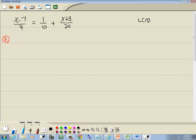Well, let's first find our LCM. We've got 4, 10, and 20. We want to write the prime factorization of each one down. 4 is 2 times 2, 10 is 2 times 5, and 20 is 2 times 2 times 5.